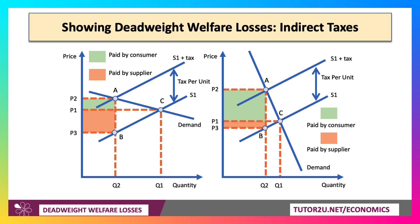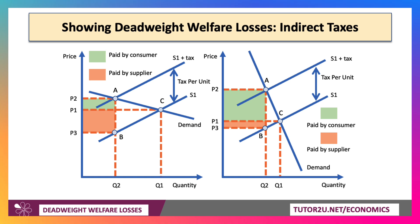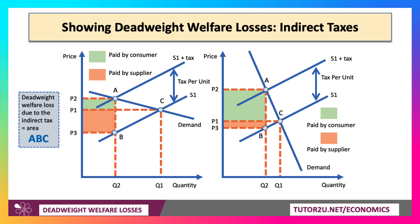And then with indirect taxes, I've drawn two examples — one with fairly price-elastic demand and one with fairly price-inelastic demand. The green and orange areas show who pays the tax. But again, the effect of a tax is to reduce quantity and increase price, and the welfare losses are equal to the areas ABC in both situations.